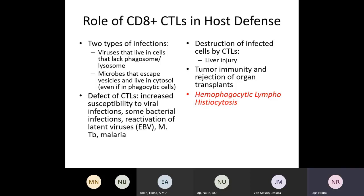CD8 cells are important for tumor immunity and rejection of organ transplants. CTLs play an important role in HLH — if they are defective, or if the microtubular structure important for granule exocytosis is defective, it causes the genetic cause of HLH, also called familial HLH.